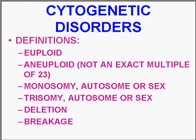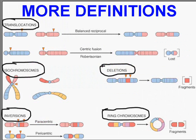Monosomies could be autosomes or sex chromosomes. Trisomies are additional chromosomes, either X, Y, or autosomes. You could have chromosomes breaking and you could have chromosomes deleting, and just about anything you could imagine.